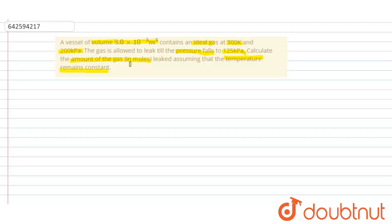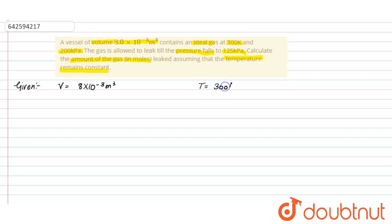It is given that we had a vessel in which we had some gas, which we have leaked. We need to calculate how much amount of gas has leaked, that is delta n. The given information: volume = 8 × 10⁻³ m³, temperature = 300 Kelvin, initial pressure = 200 kilopascal, and final pressure = 125 kilopascal.